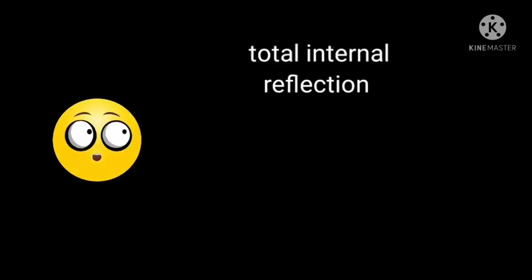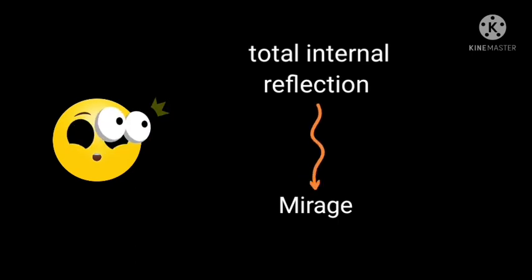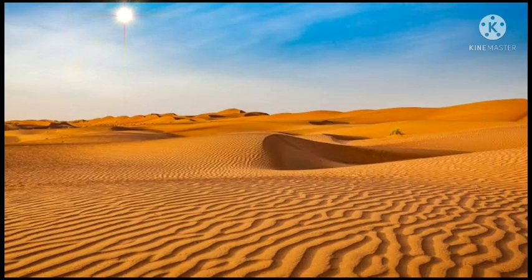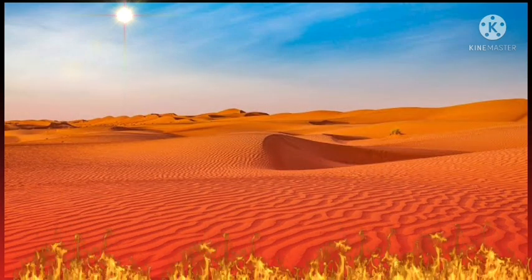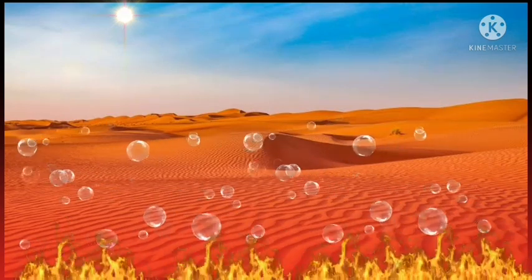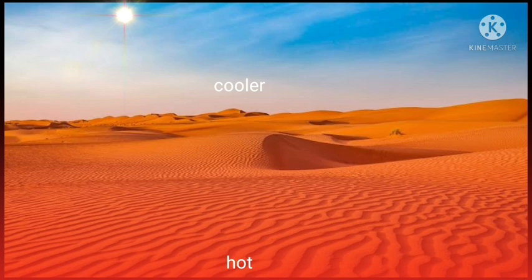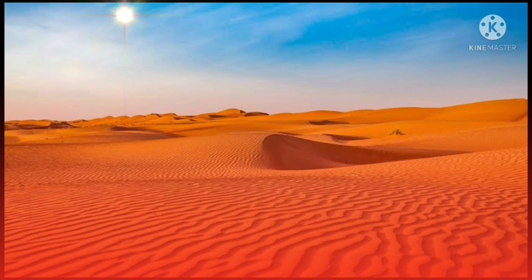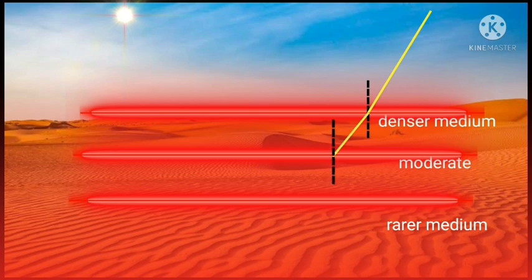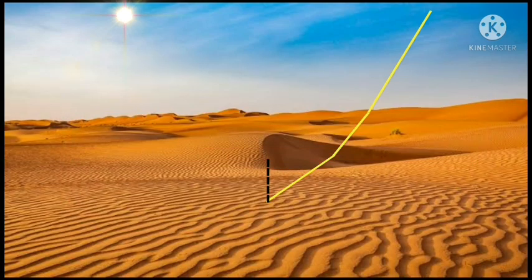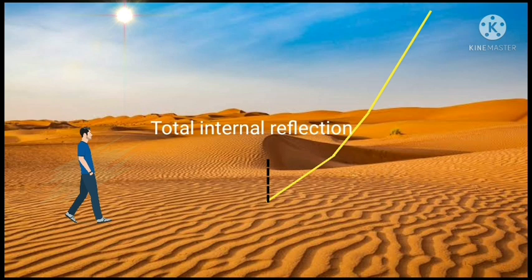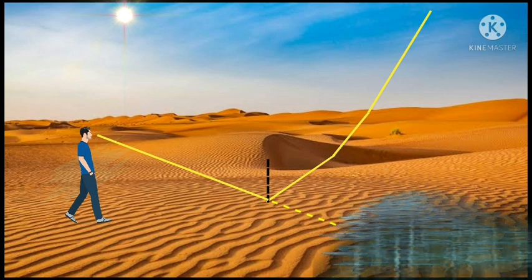Now you might be thinking how this total internal reflection leads to the formation of mirages. On a very hot day, the land becomes very hot, so it heats up the air near the ground and air molecules expand. The upper atmosphere is cooler compared to the lower atmosphere, so it behaves like a denser medium and the lower atmosphere behaves like a rarer medium. When light coming from the sky travels through different atmospheric layers, it keeps bending away and away until its incident angle becomes greater than the critical angle, and there total internal reflection takes place. When this light enters our eye, our eye traces a straight line in the backward direction and creates an illusion of water over there. So mirage formation is due to the total internal reflection of light coming from the sky.